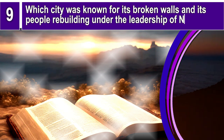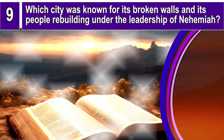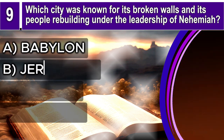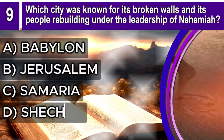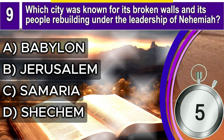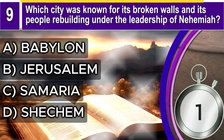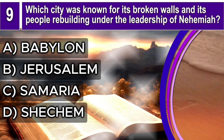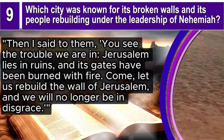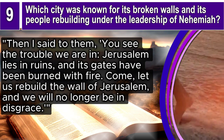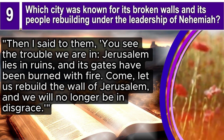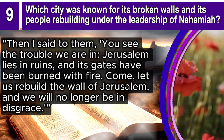Question 9. Which city was known for its broken walls and its people rebuilding under the leadership of Nehemiah? A. Babylon, B. Jerusalem, C. Samaria, D. Shechem. The correct answer is B. Jerusalem. Nehemiah 2, verse 17 says: Then I said to them, You see the trouble we are in? Jerusalem lies in ruins, and its gates have been burned with fire. Come, let us rebuild the wall of Jerusalem, and we will no longer be in disgrace.